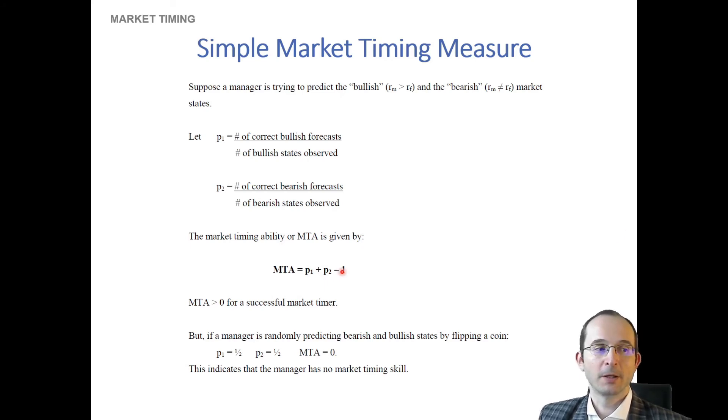And then what we can do is we can just add those two probabilities up and subtract one. And really, if you are a successful market timer, that would mean that your hit rate for both should be above 50%, or at least your hit rate for one should be above 50% sufficiently to offset a lower hit rate than the other, such that when you add them up together, your hit rate would exceed one.